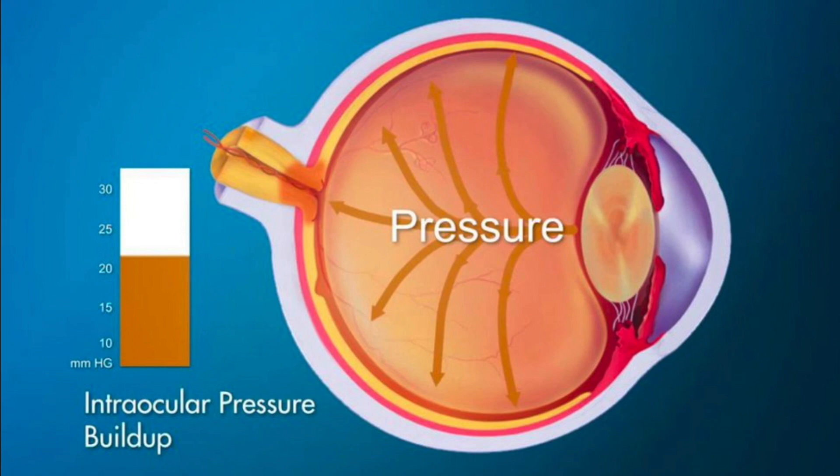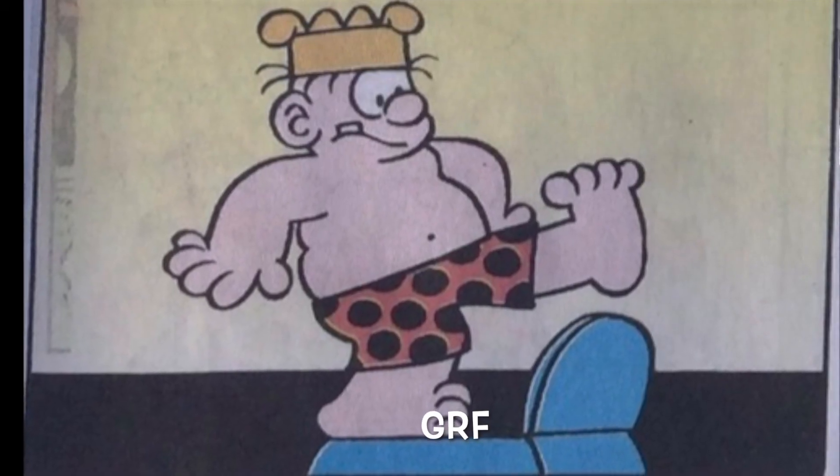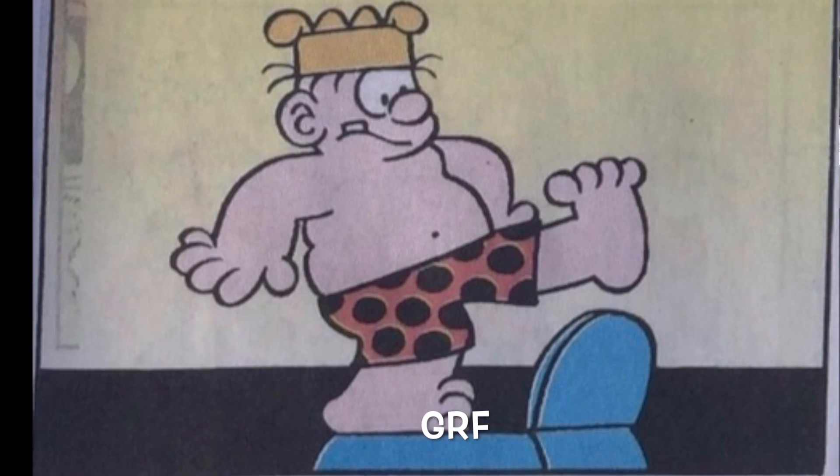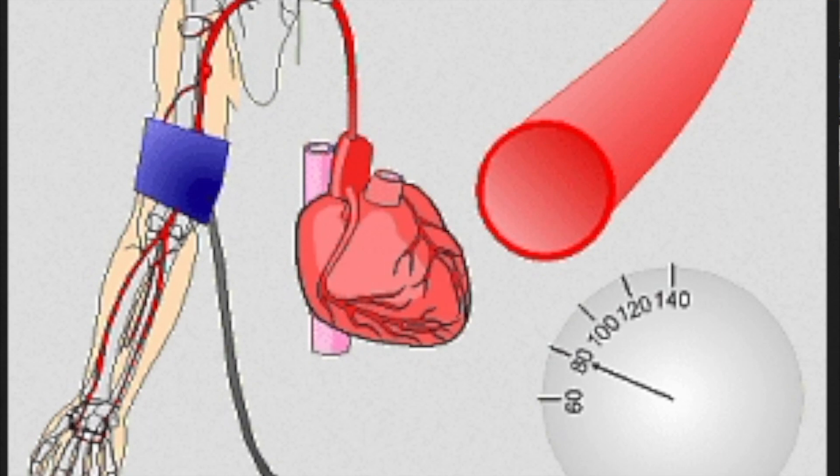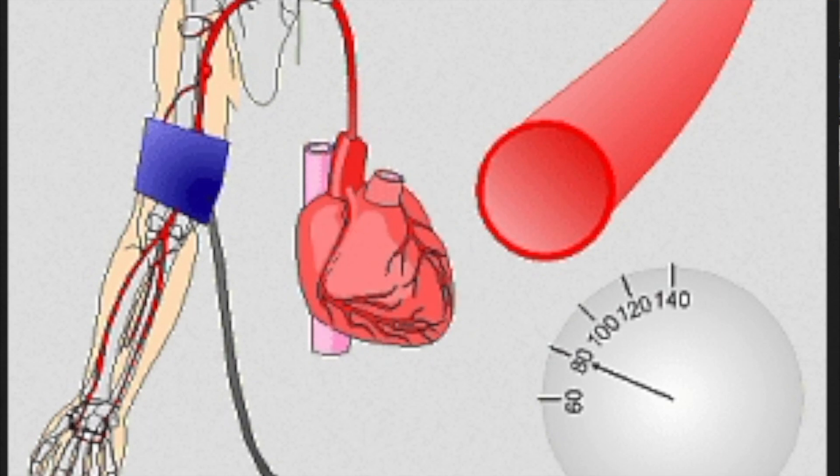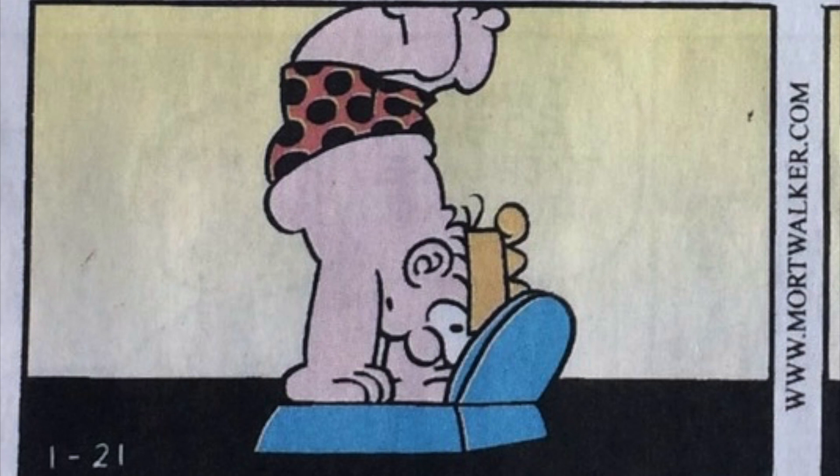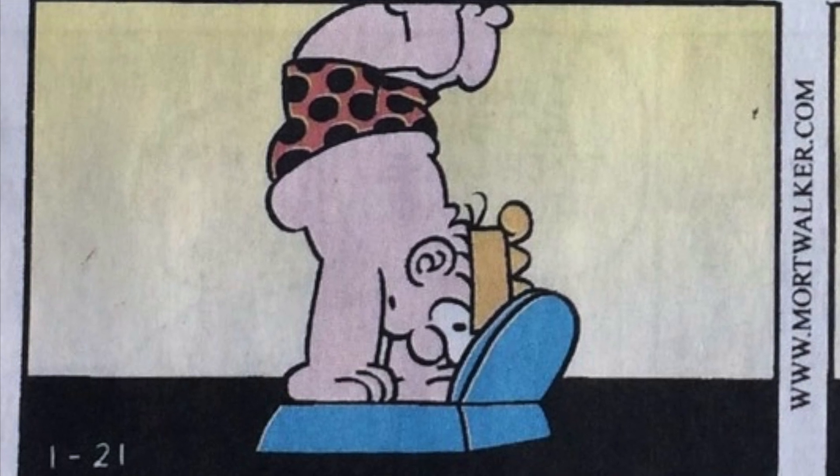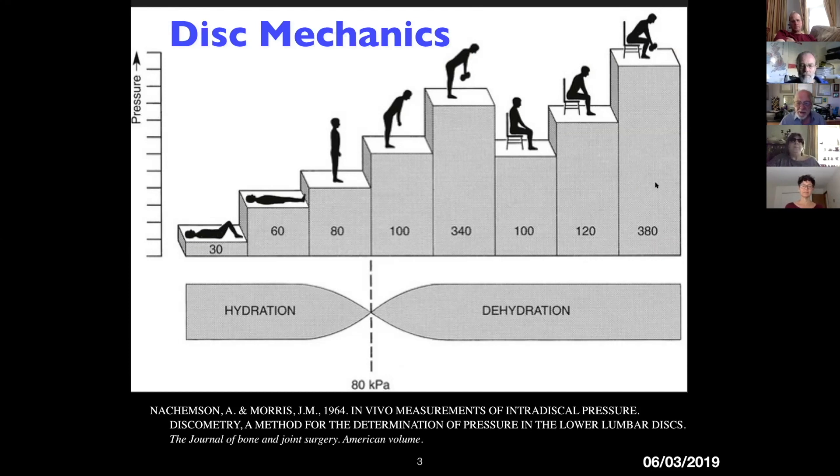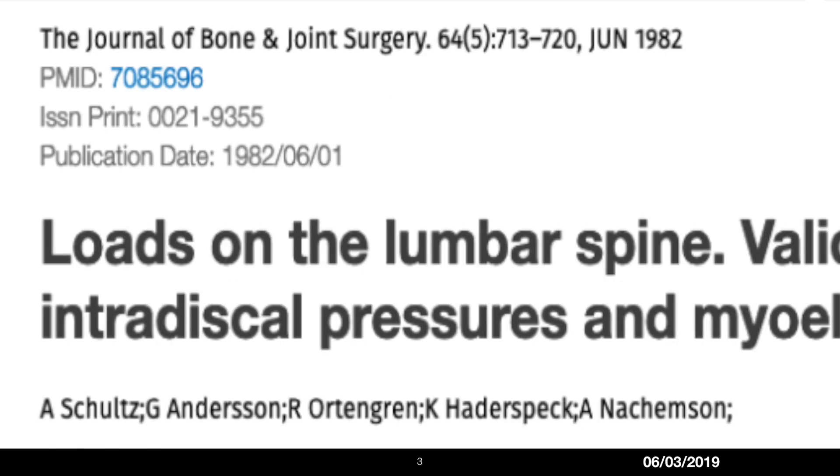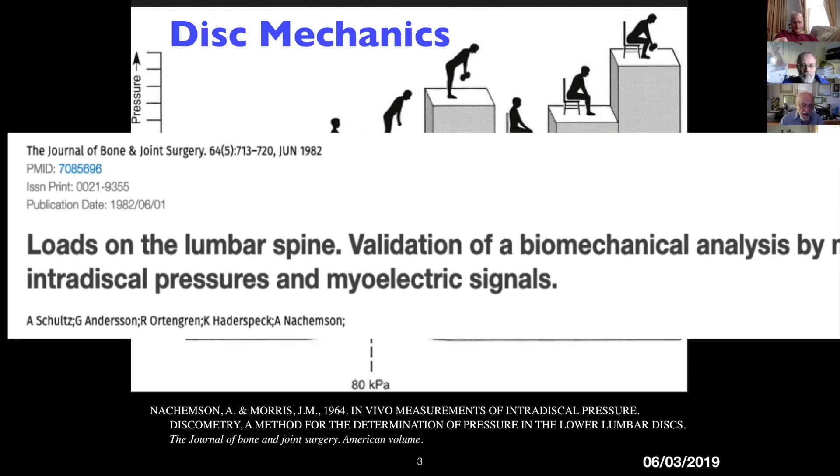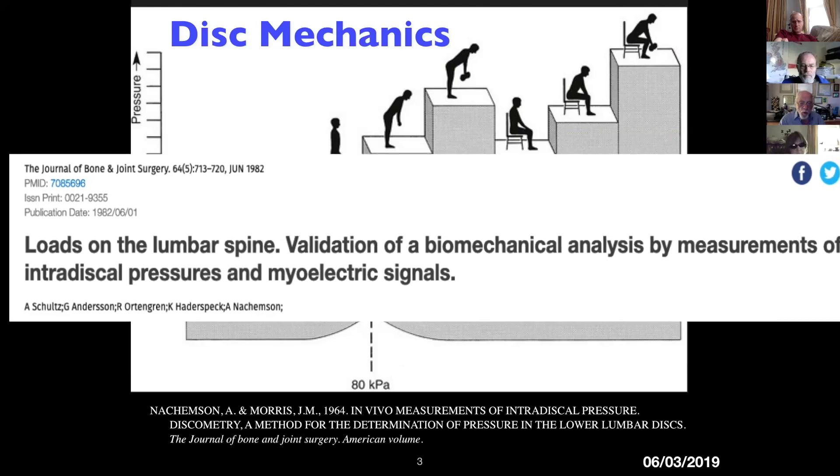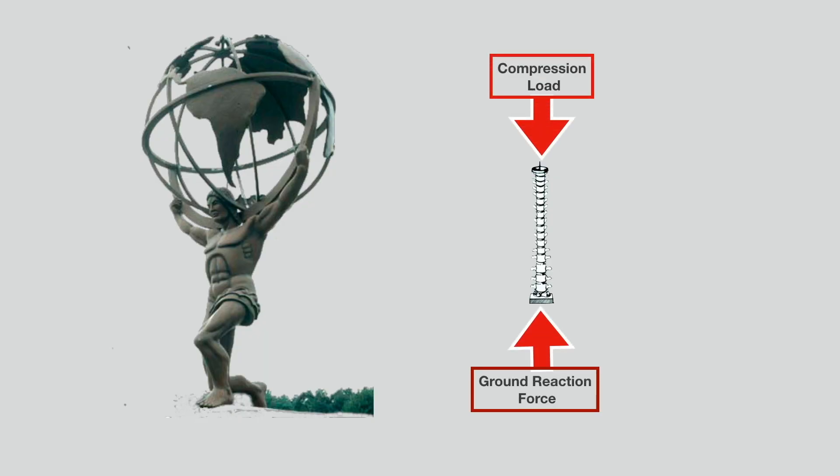You increase my intraocular pressure, it doesn't do anything to the pressure of my body on the floor. Right. It's an internal force. You increase my blood pressure and it still doesn't do anything to my body mass. It just increases the pressure, but the force on the floor does not change. So they measured the pressure in the disc in these different postures and deduced from that that there was an increased load passing through the disc into the vertebral bodies, which confirmed their concept that the spine is a column.